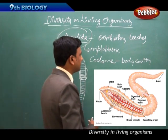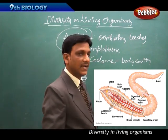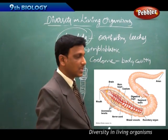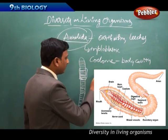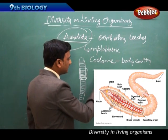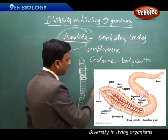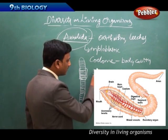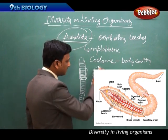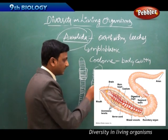Examples of Annelida are earthworms and leeches, both of which have a segmented body with many ring-like segments visible on the outside.